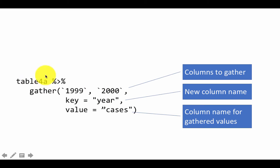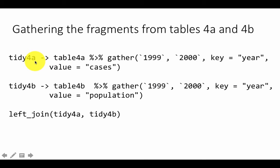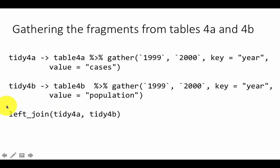Now that we've seen how to clean up Table 4a, let's take a look at how to clean up Table 4b and the overall thing. Tidy_4a is what we just did. Tidy_4b is a similar operation performed on Table 4b — everything is the same except the value column is now population instead of cases. Now we want to join both of these tables together: we've got country, year, and cases from tidy_4a, and country, year, population from tidy_4b. We join them using the left_join function, matching on the leftmost columns. This is a function we will cover later on. Using all of these operations, we get back what looks like Table 1 — our tidy representation.